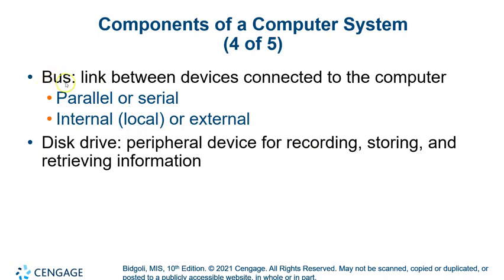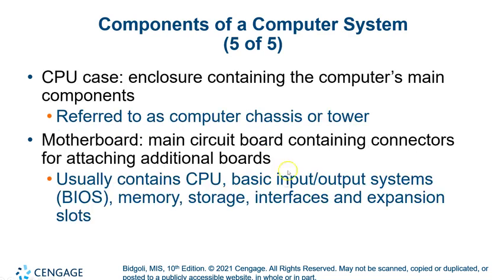Data travels along buses, and the larger the bus, the faster data can be transported. Disk drives — whether inside the machine, peripheral, or up in the cloud — are where we actually store and record information. It's amazing how much growth there has been in computer storage capacity in just one lifetime. We'll wrap up this part here and break Chapter 2 into two parts.